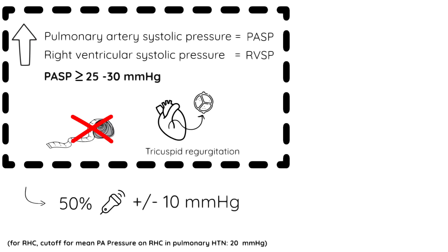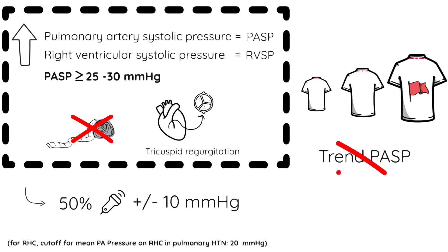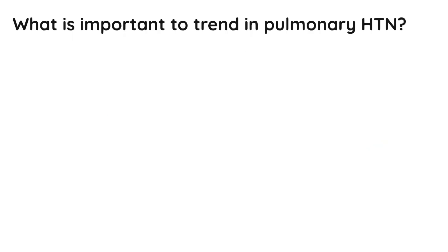So think of PASP estimation on echo as t-shirt sizes — small, medium, and large. It gives you a rough idea of how big it is, which is useful as an initial red flag. So if you see a PASP of 80 or so, you know that's abnormal. But the PASP is a ballpark estimate, so small changes up and down over time might not have that much clinical relevance. So what is important to trend?